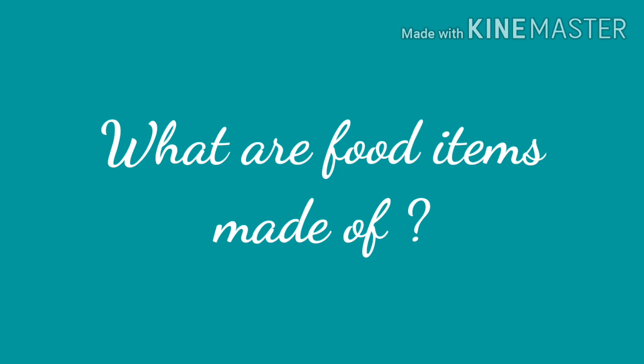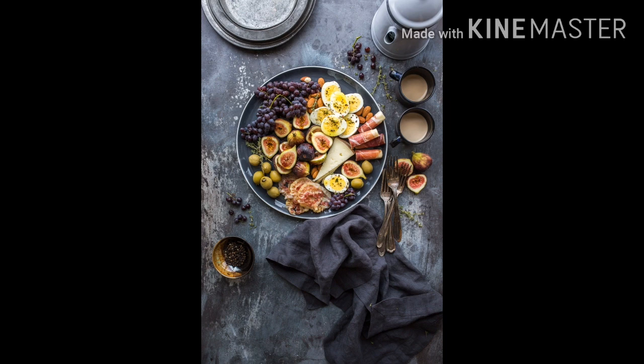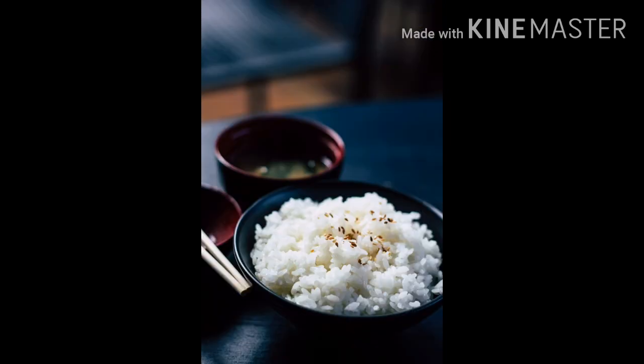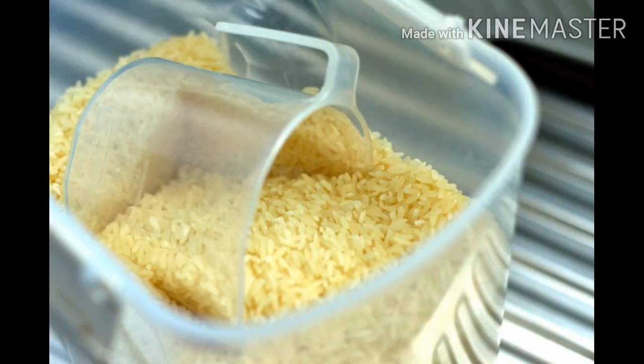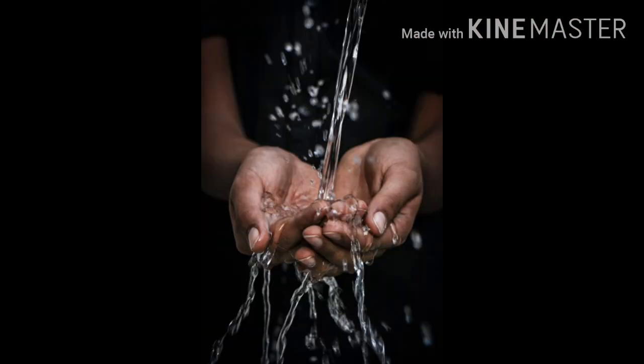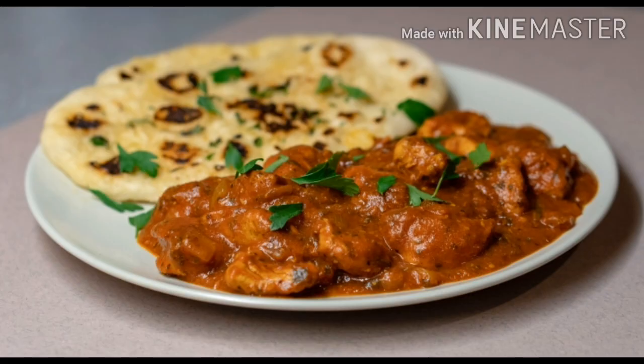Our second topic is: what are these food items made of? There is a variety of food items, so it's obvious that different things would be used to prepare them. Take the example of rice — what do we use to make it? You will simply say water and rice. So the things used to make a food item are known as ingredients. Now, tell me what ingredients are used to prepare vegetable curry?